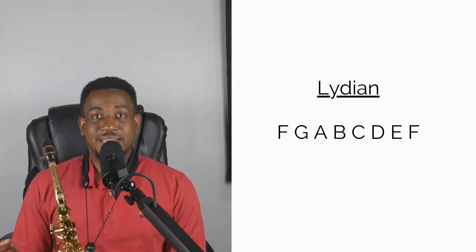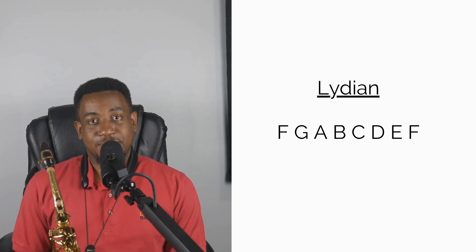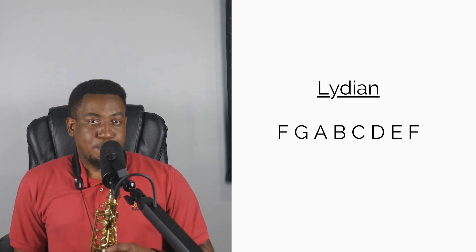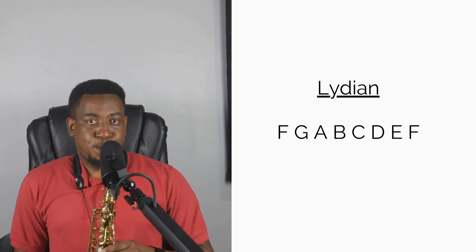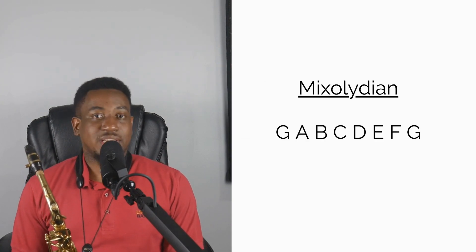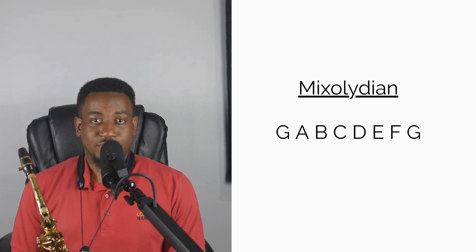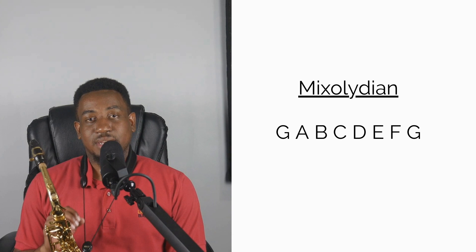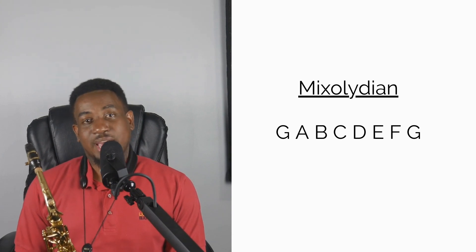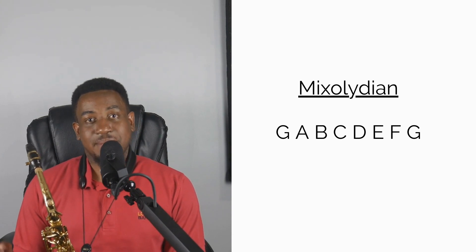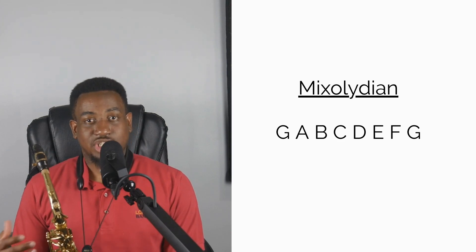The fifth mode is the Mixolydian mode. G is the fifth scale degree in the C major scale, so you have G A B C D E F G.